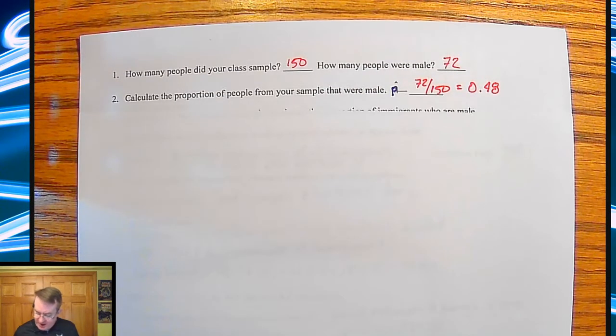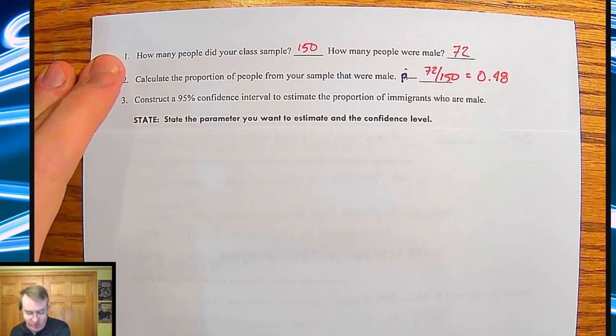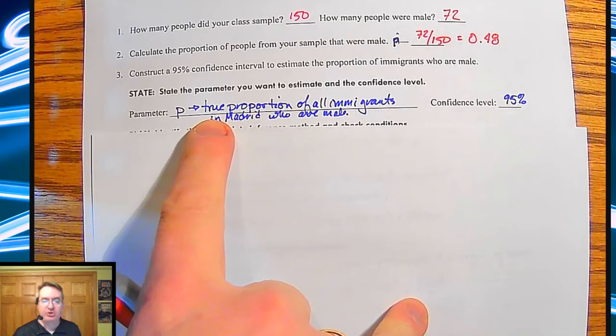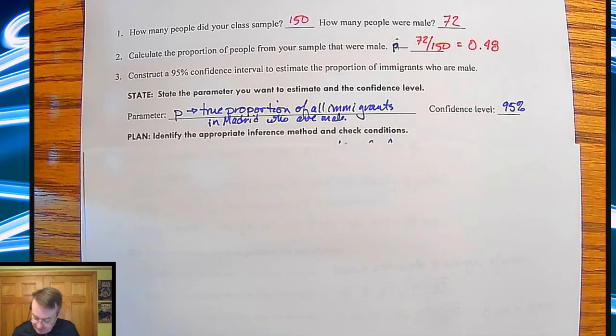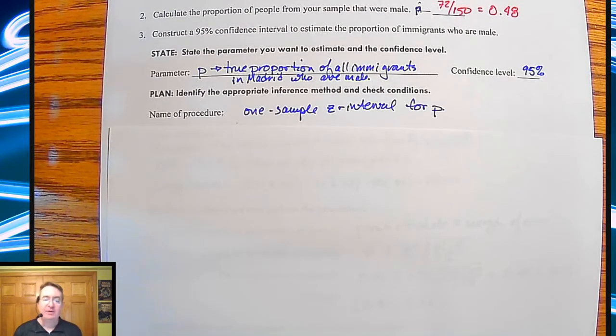So now we're going to construct a 95% confidence interval. Remember the confidence interval is where we believe the true proportion is being captured to estimate the proportion of immigrants who are male. So in this case here, the first thing we're going to do is we need to state what we're doing and what we're trying to do. So like in this case here, we're going to state that P is the true proportion of all immigrants in Madrid who are male. And the confidence level is going to be 95%.